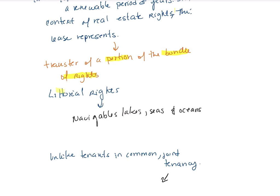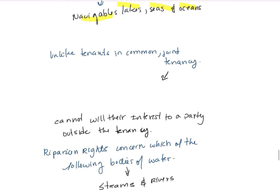A littoral right applies to navigable lakes, seas, and oceans. Unlike tenants in common, joint tenants cannot will their interest to a party outside the tenancy — the interest passes by right of survivorship to the remaining joint tenants.